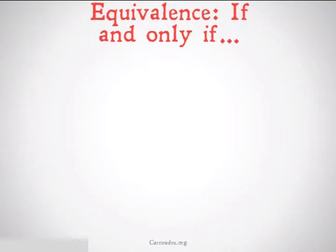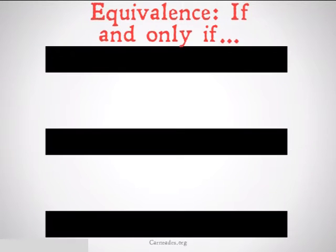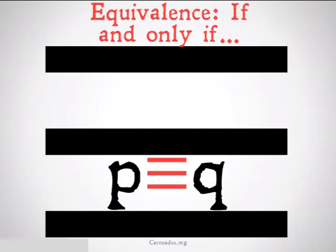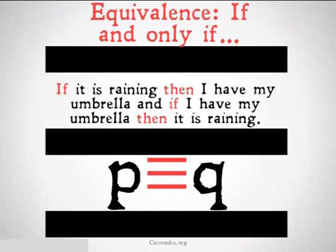Equivalence is basically 'if and only if' and it's going to be represented by a triple bar. If you want to say 'P if and only if Q' or 'P is equivalent to Q,' you write P triple bar Q. For example: if it is raining, then I have my umbrella, and if I have my umbrella,